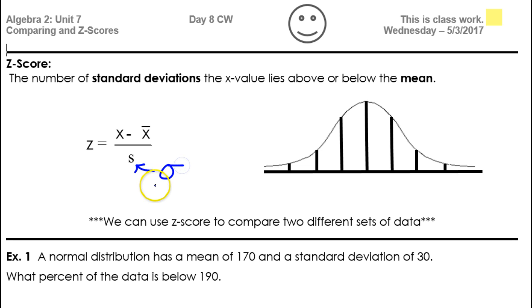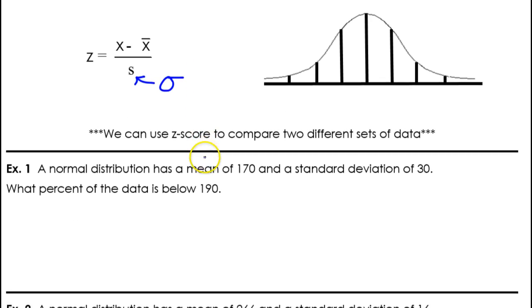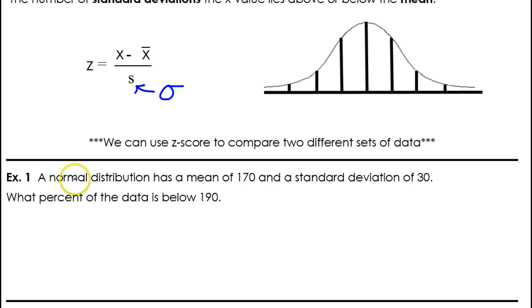Instead of using S, we normally use sigma. Okay, somebody's being lazy, whoever made this worksheet. Anyway, look at example one. A normal distribution has a mean of 170, standard deviation of 30. What percent of the data is below 190?